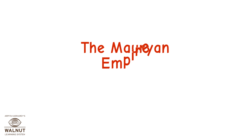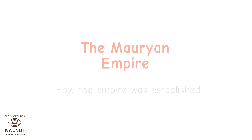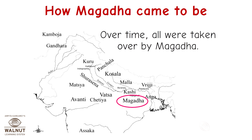In the Mauryan Empire, how was the empire established? How did Magadha come to be? There were 16 Mahajanapadas, and over time, all were taken over by Magadha.